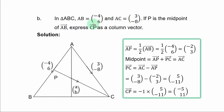Question 13B. In triangle ABC, AB is equal to negative 4, 6, that is a column vector, and AC is equal to 3, negative 8, another column vector.